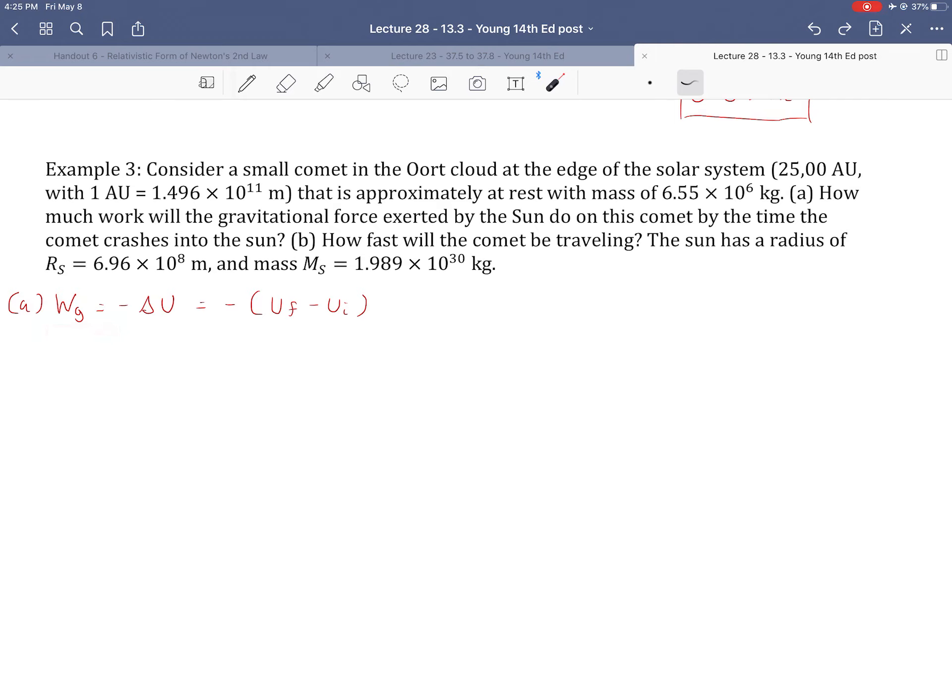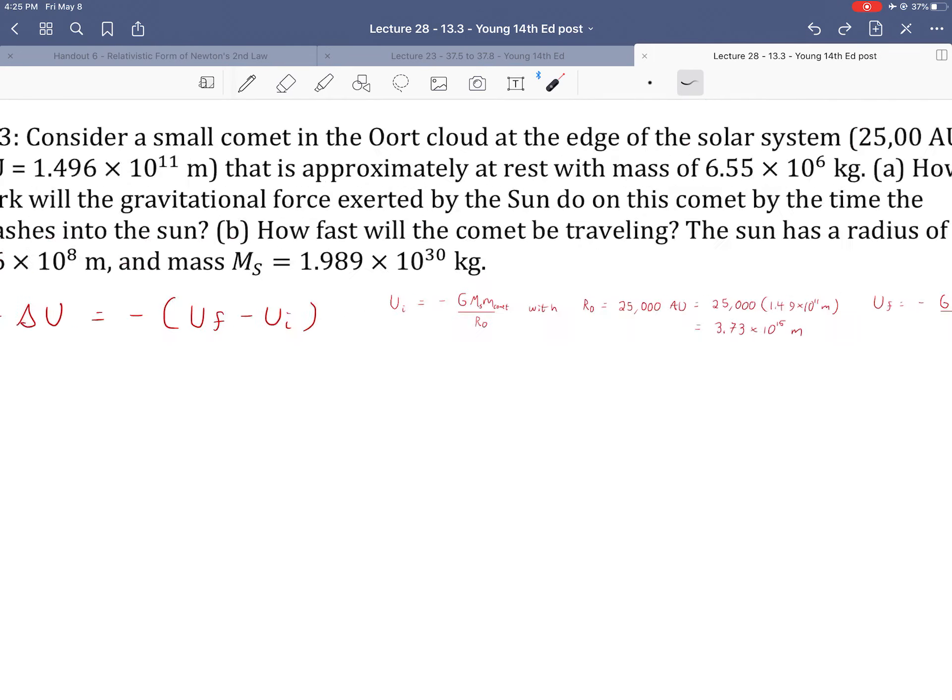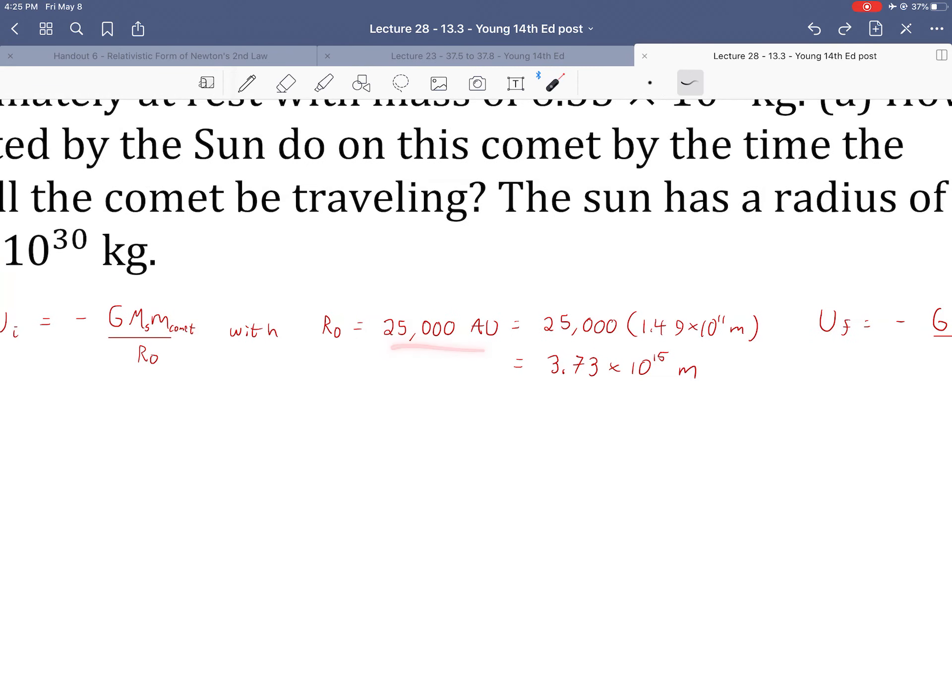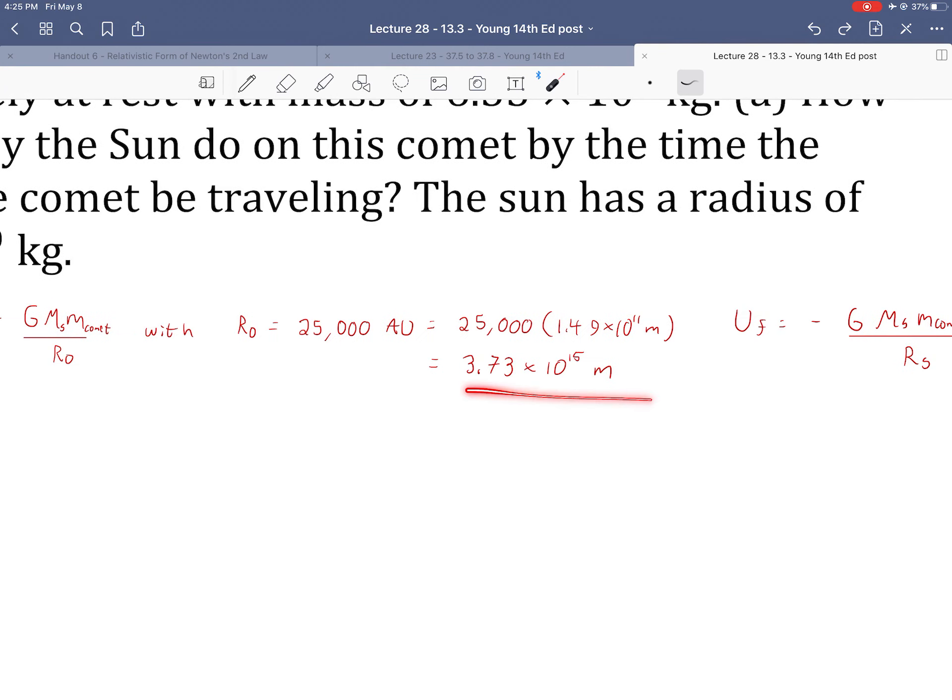So we need the work done by gravity to equal the negative of the change in potential energy. In this case, we're going to have a U final and U initial. Notice here that neither U final nor U initial is zero. So U initial is going to be gravitational constant, mass of the sun, mass of the comet, and the initial distance between the two. The initial distance is 25,000 astronomical units.